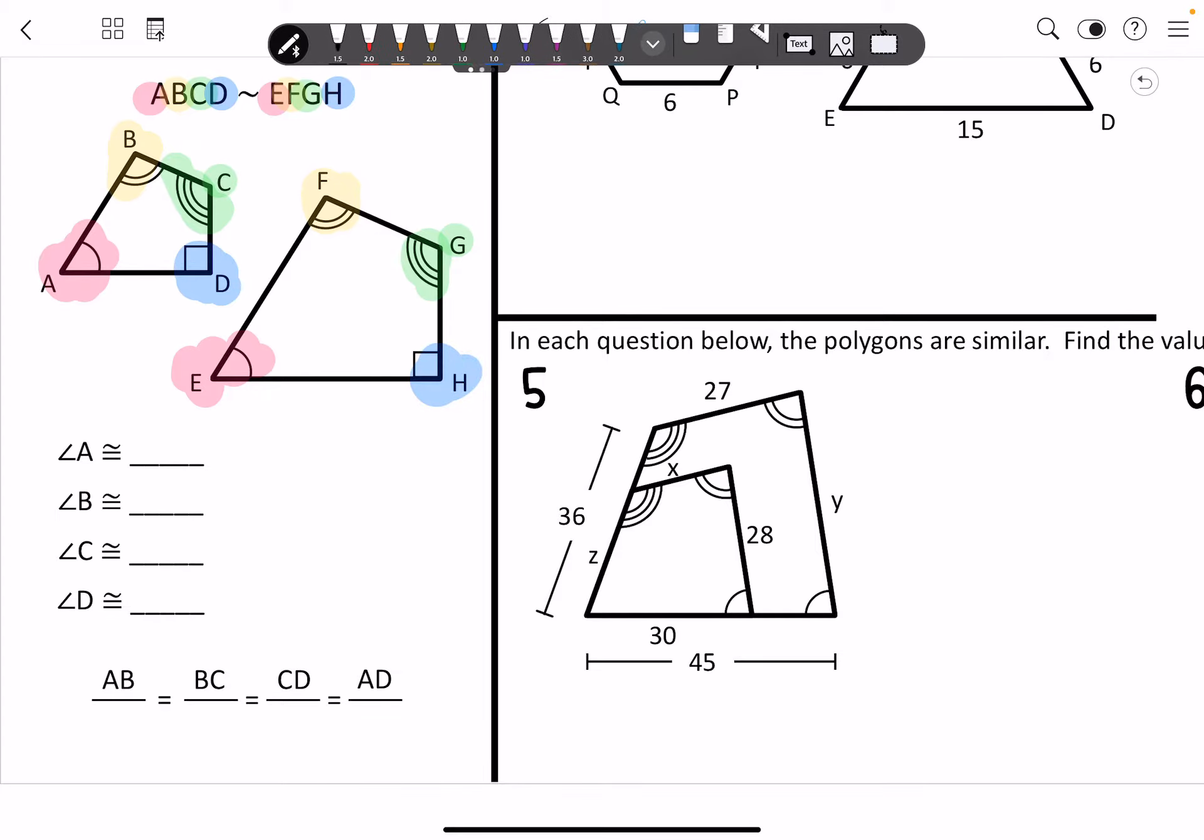So if you've got A, B, C, D, then you've got E, F, G, H. So your angles are congruent.